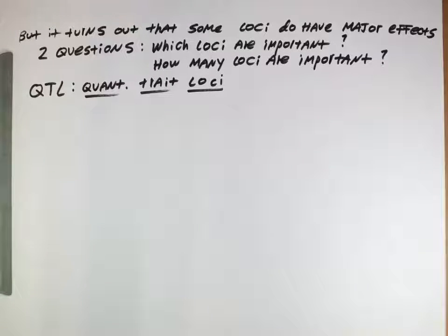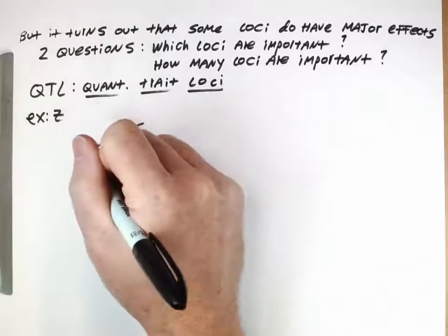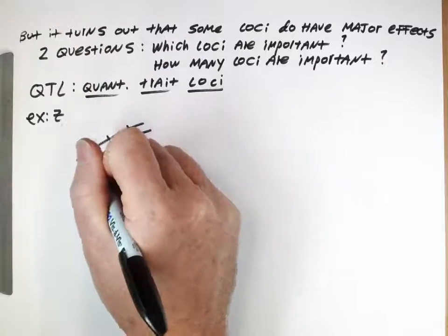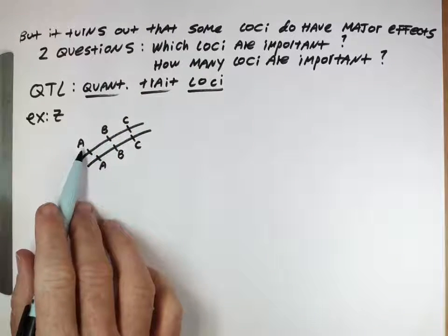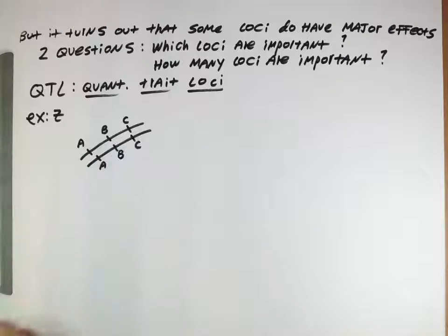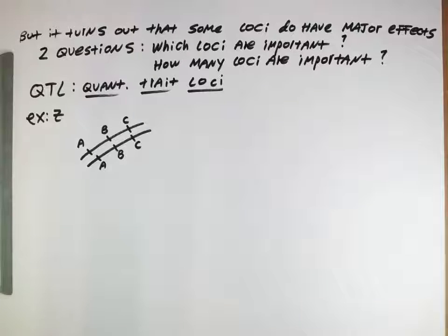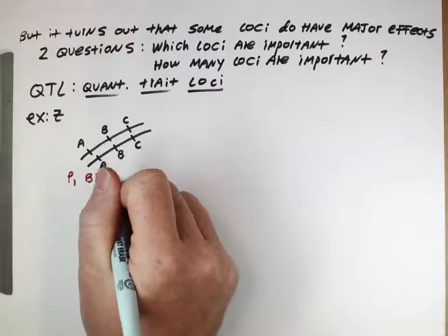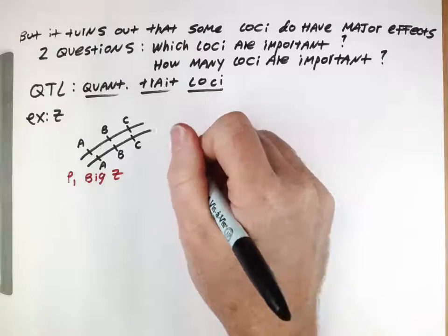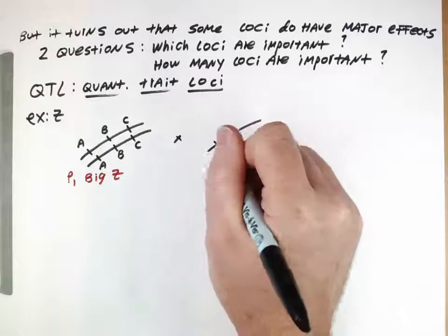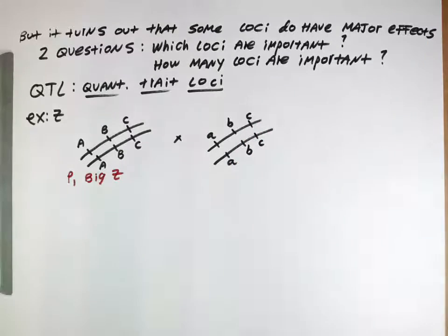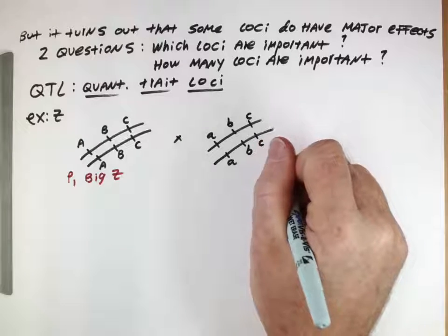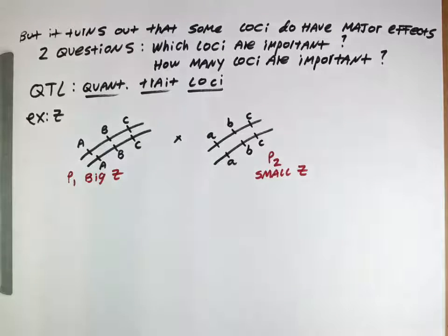Let's diagram out how this experiment is done. Our trait that we're interested in, we'll call Z. We're going to have an individual here, looking at their genome. Throughout their genome, there's a number of different locations. We can identify these individuals as being homozygous for certain alleles at these locations. This P1 individual will have a large value of Z. Then we're going to cross them with another individual. This individual has different alleles at a number of these loci. This parent 2 will have a small value of whatever that trait is.